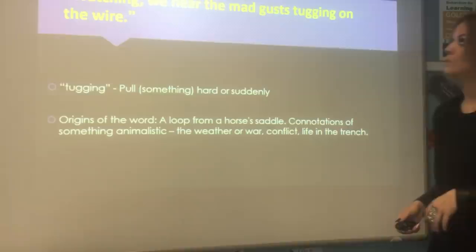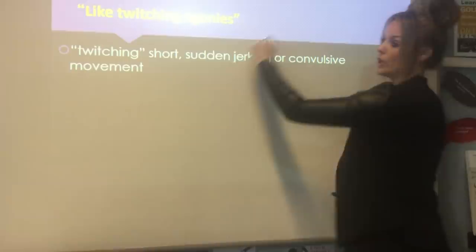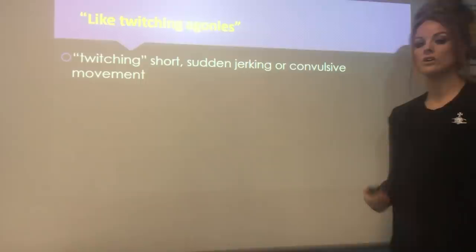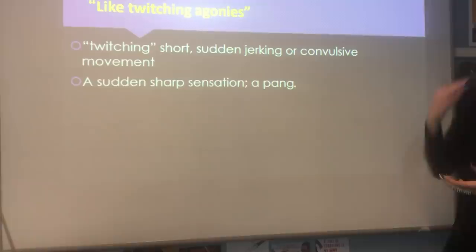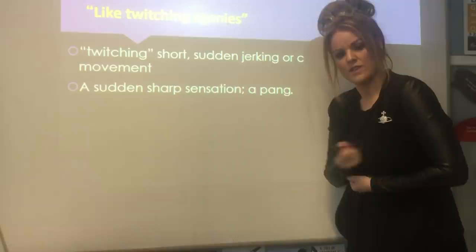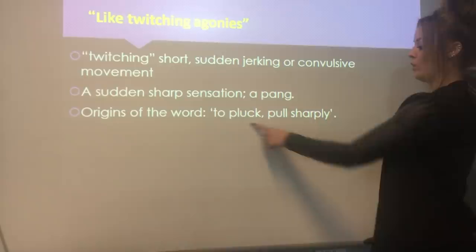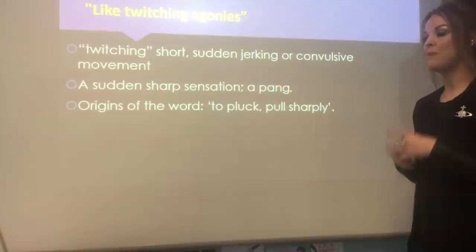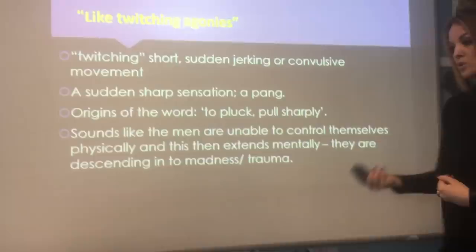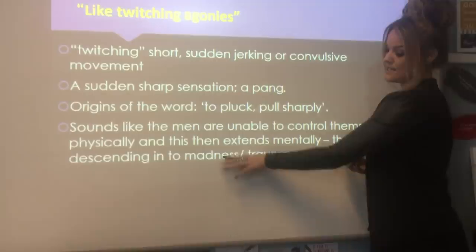'Like twitching agonies' is a simple simile, but we want to go to single words. 'Twitching' — a short, sudden jerking or convulsive movement, as if the men aren't in control of themselves; it's a sudden sharp sensation. That takes it back to the opening line and the sense of being knifed. The origins of the word: to pluck and to pull sharply. You can imagine the men being tugged in all directions, pestered incessantly and constantly. It also sounds like the men can't control themselves, can't control their fate, can't control what happens to them physically or mentally — they're going to descend into madness or trauma.